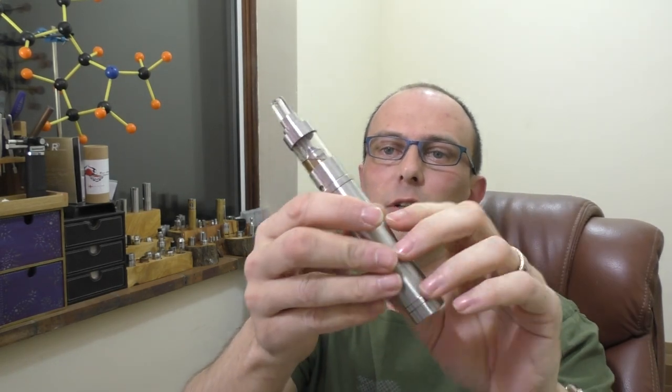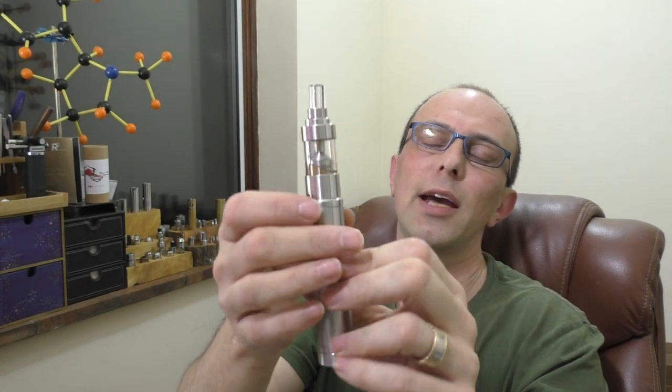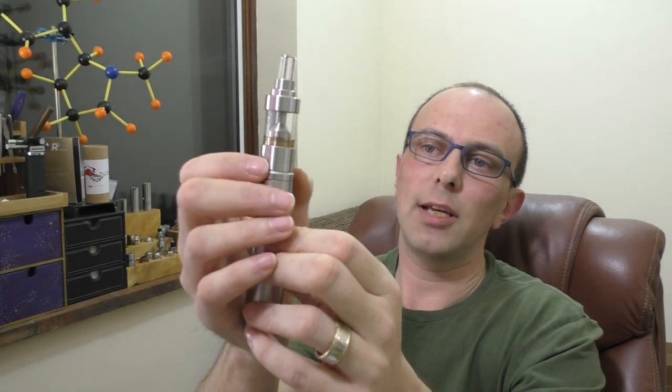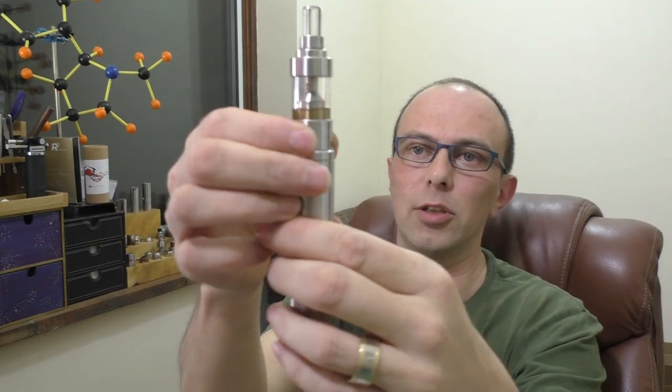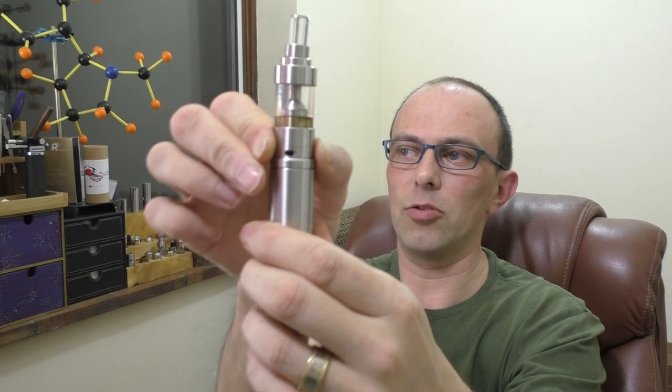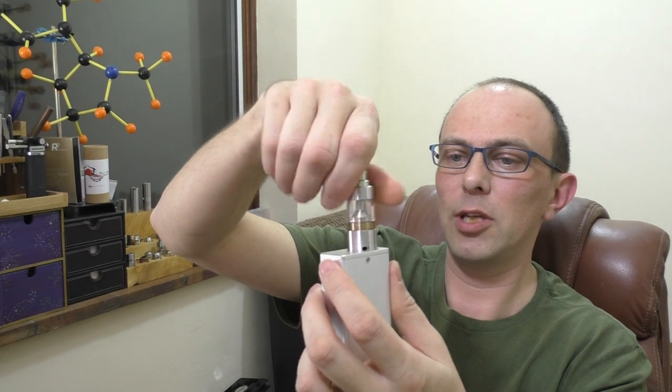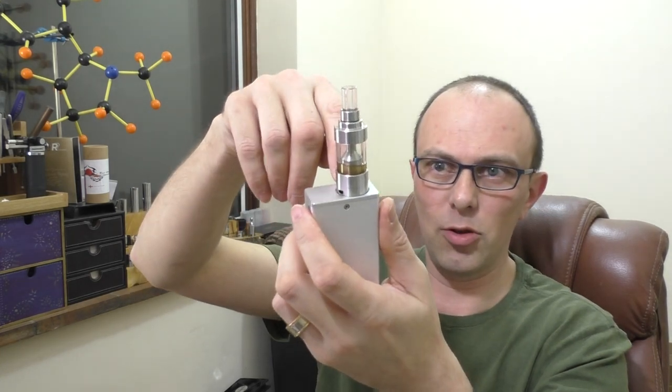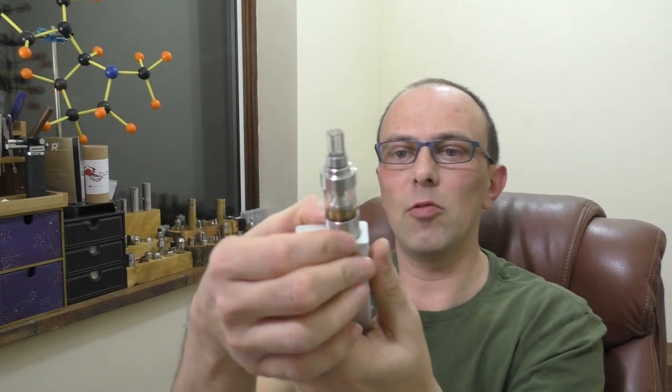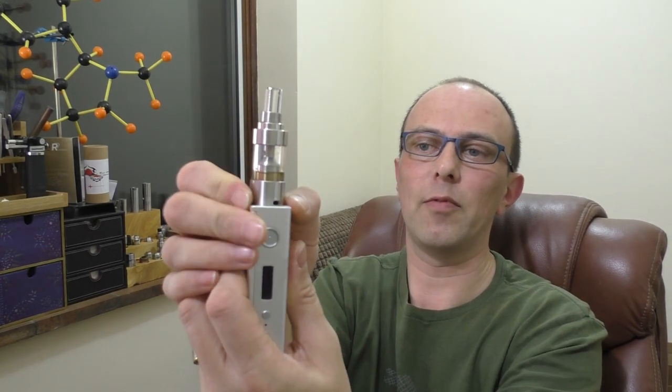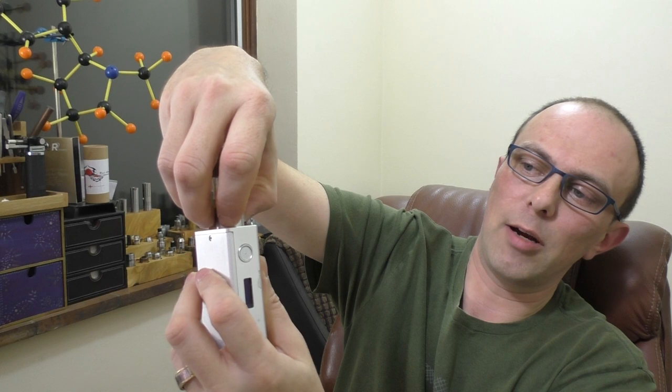I've got the smaller Smok M50 here and it's starting to look a little bit more out of proportion on that with the larger tank section. One of the things that I mentioned in the close-ups was the juice control, the air control. So on a tube mod it's actually not too bad. You can grab the air control relatively easily and you can turn it round.